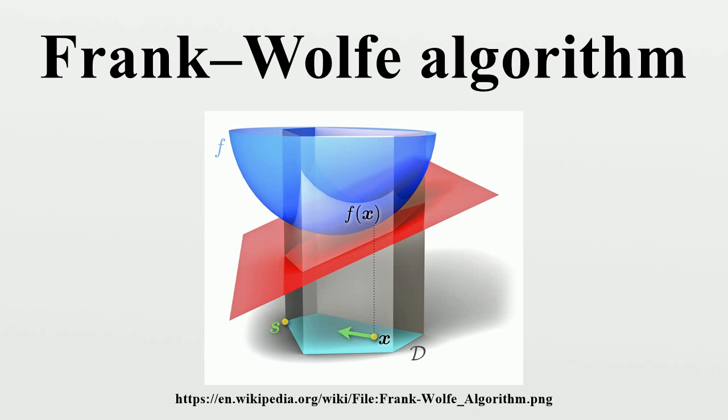Properties: While competing methods such as gradient descent for constrained optimization require a projection step back to the feasible set in each iteration, the Frank-Wolfe algorithm only needs the solution of a linear problem over the same set in each iteration and automatically stays in the feasible set.